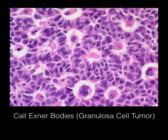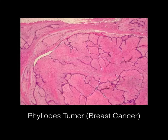Here we have Call-Exner bodies, which you find in a granulosa cell tumor. It's a distinct image so take a few seconds to stare at it and become familiar with it. One of the ways they go after rarer, lower-yield tumors like the granulosa cell tumor is to show you histological slides to see if you really understand what you're looking at.